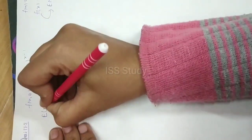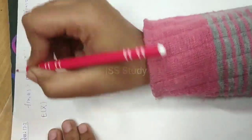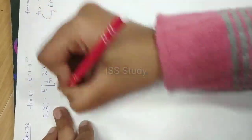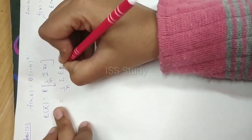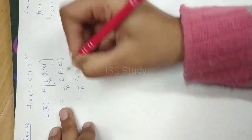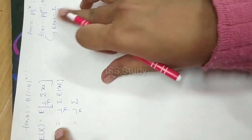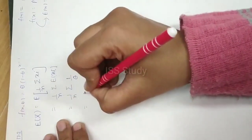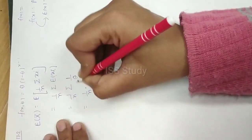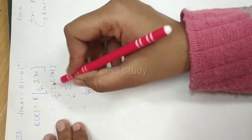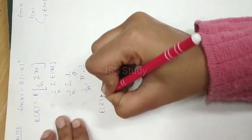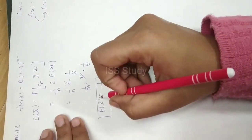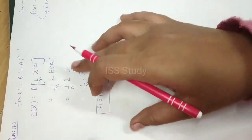Now we have to find the unbiased estimator. We will take the expectation of x bar. The expectation of x bar equals 1 upon n times summation of xi. The constant 1 upon n goes out, and the expectation operates on each xi. Since the expectation of xi is 1 upon theta, and summation runs from 1 to n giving a factor of n, the n's cancel out. So the expectation of x bar equals 1 upon theta, proving that x bar is the unbiased estimator of 1 upon theta. This is Part A.